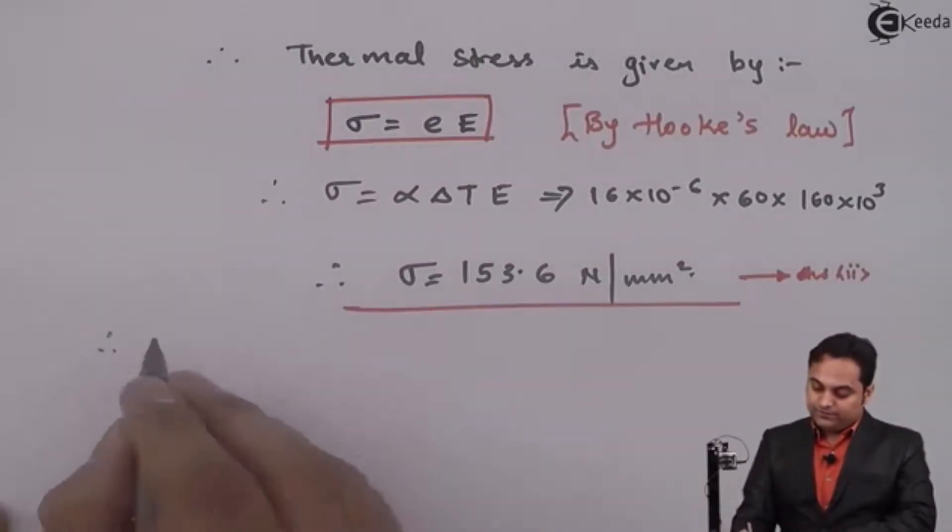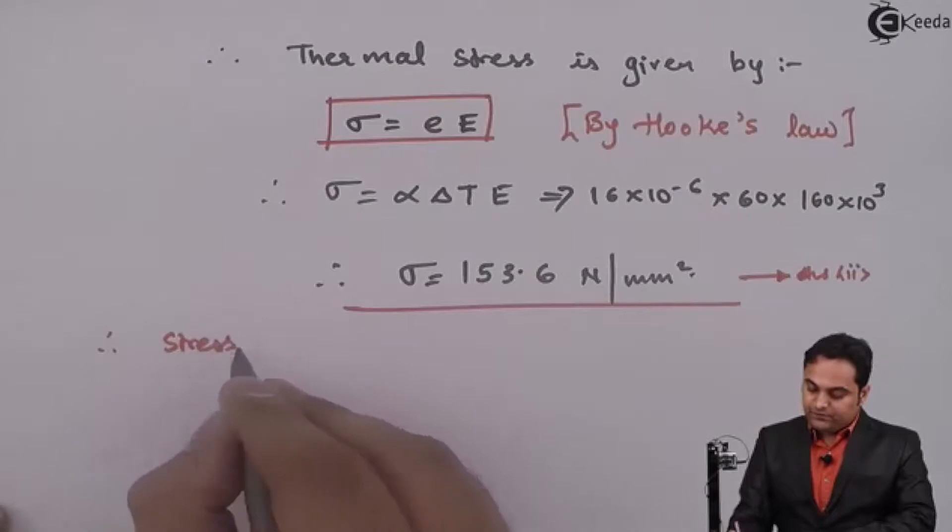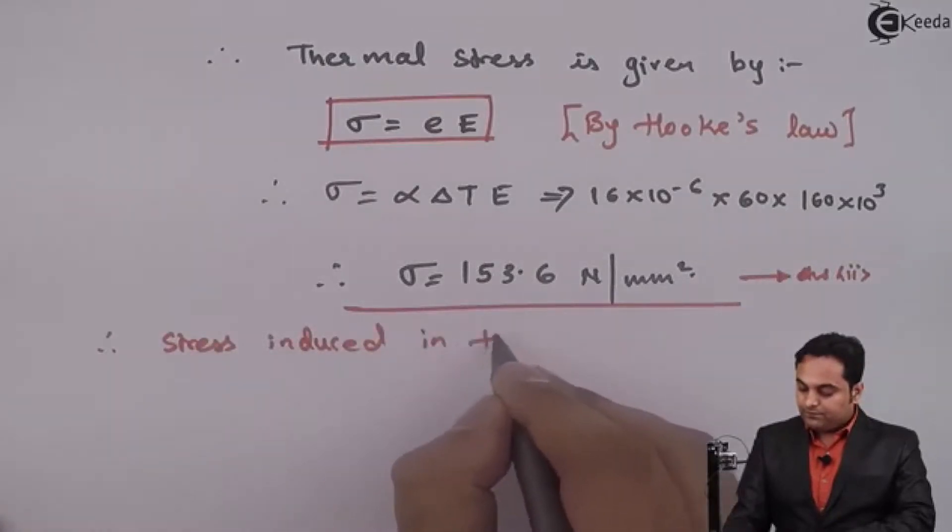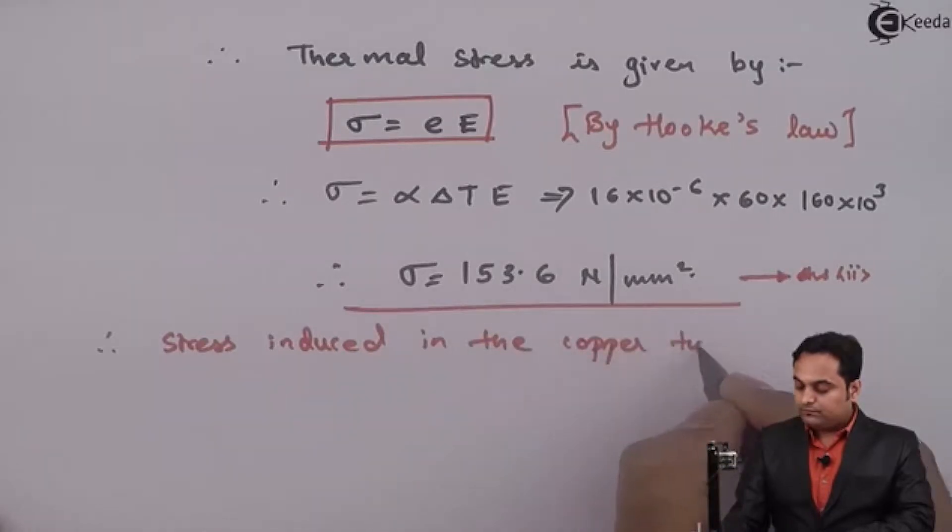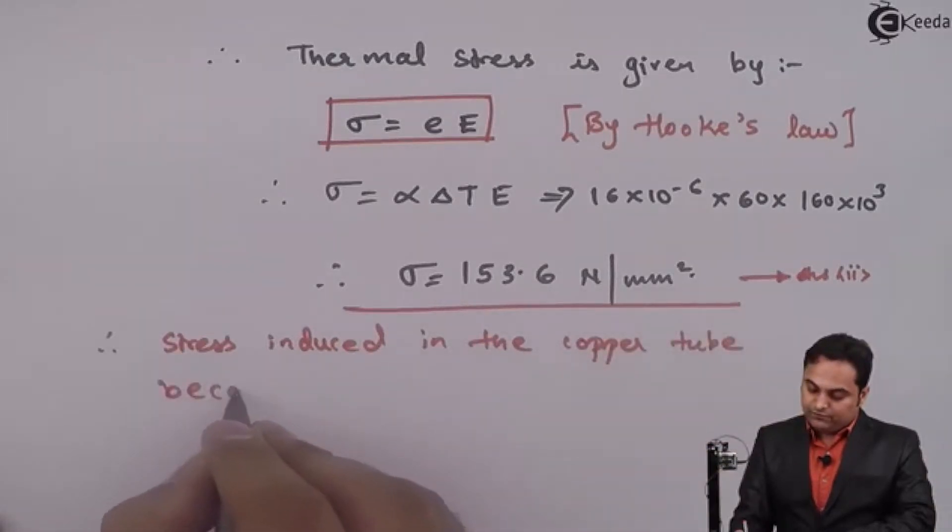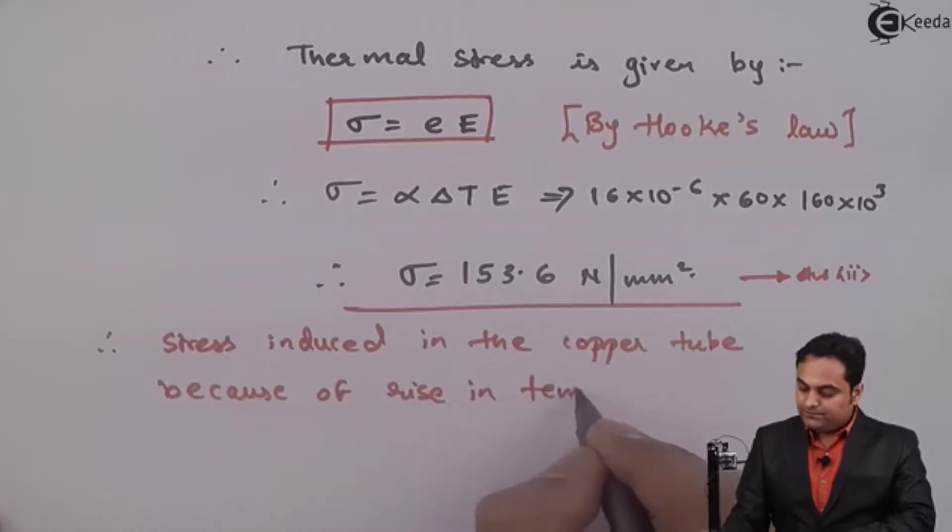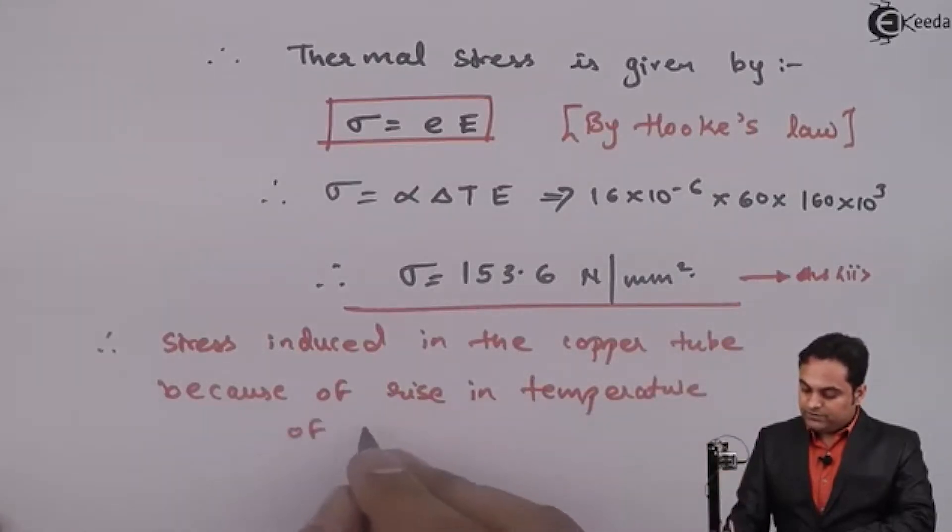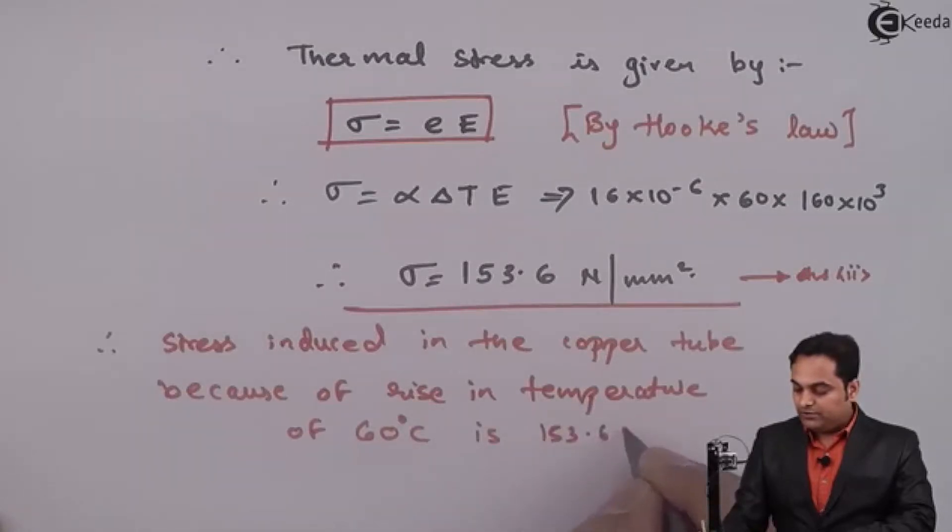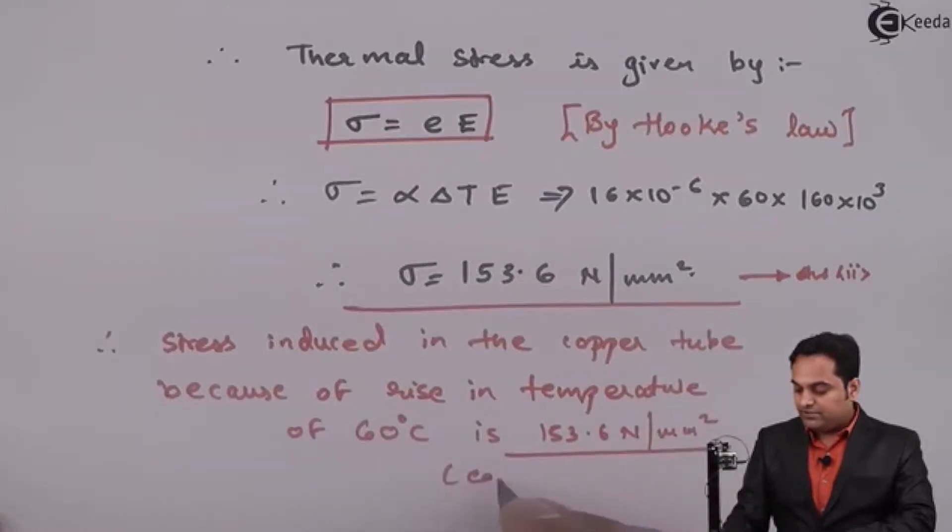So this is the second answer. We can say that therefore stress induced in the copper tube because of rise in temperature of 60 degree Celsius is 153.6 newton per mm square and the nature is compressive.